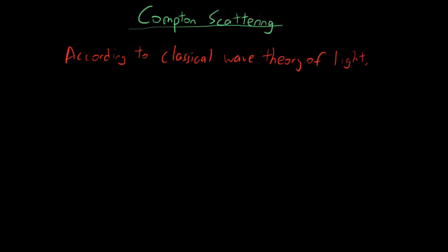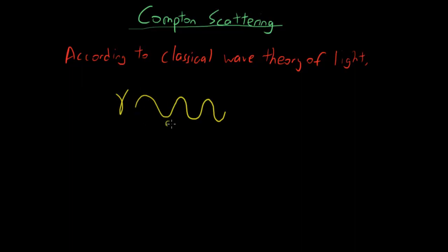Let's explain what the scattering effect was. Imagine a photon, represented by gamma. Since wave theory says light behaves as a wave, let's draw a wave. Imagine this wave is all the same wavelength. Imagine this is the light and it hits an electron — a free electron in space, just sitting there at rest.